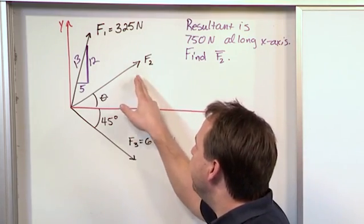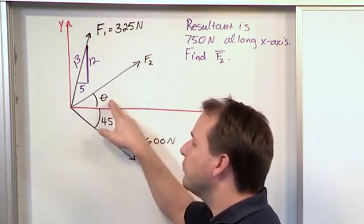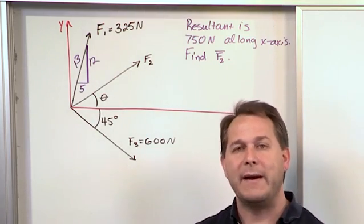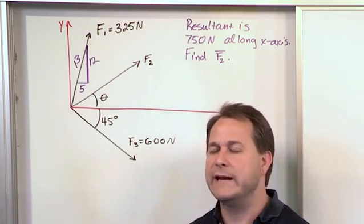We do have a vector F2, but we don't know what it is, and we don't know what angle it is. We've just drawn a placeholder for it, and we've given it a magnitude and a direction of theta, but we really don't know what that is right now.